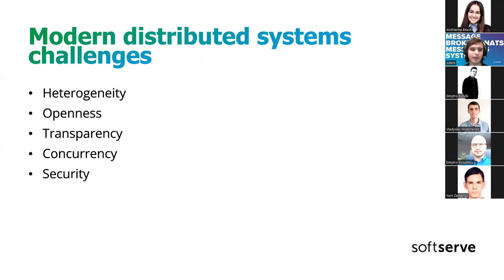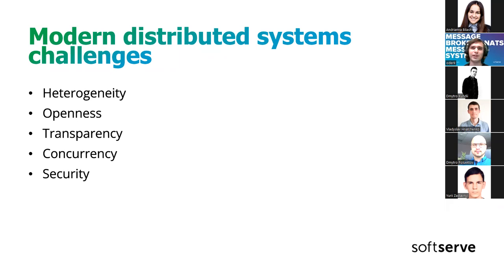Openness is the ability to introduce new components into your system easily. For example, you have components that already communicate with each other, and you want to add a new component. It's a good idea to make this process as straightforward as possible.